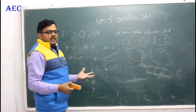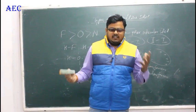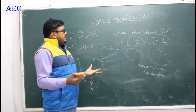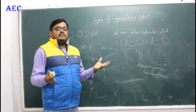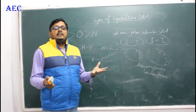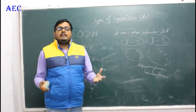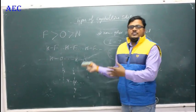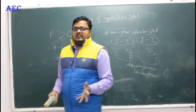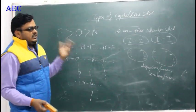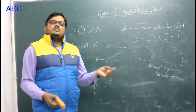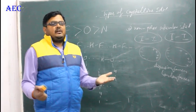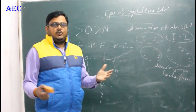Let us revise what we have studied so far. We started the solid state chapter. A solid has definite mass, definite volume, and definite shape. Solids have two classifications: crystalline solid and amorphous solid. Crystalline solids have four types: ionic solid, molecular solid, covalent solid, and metallic solid. For each type, you need to learn the constituent particles, the type of forces, and the examples. The next topic will elaborate further on this.